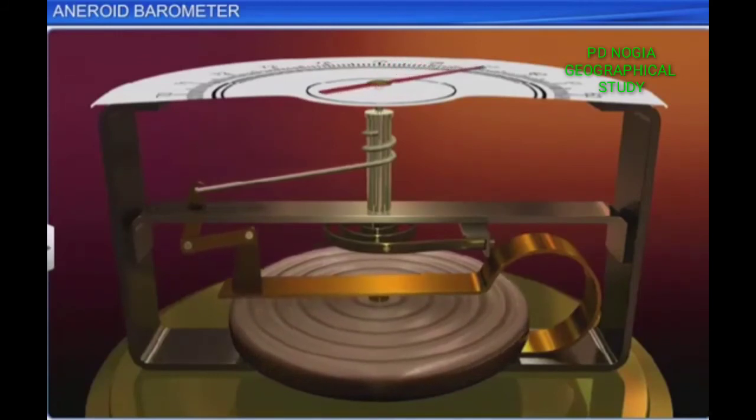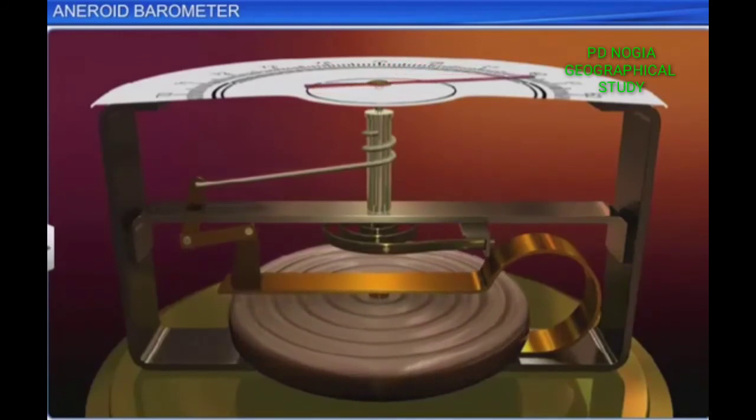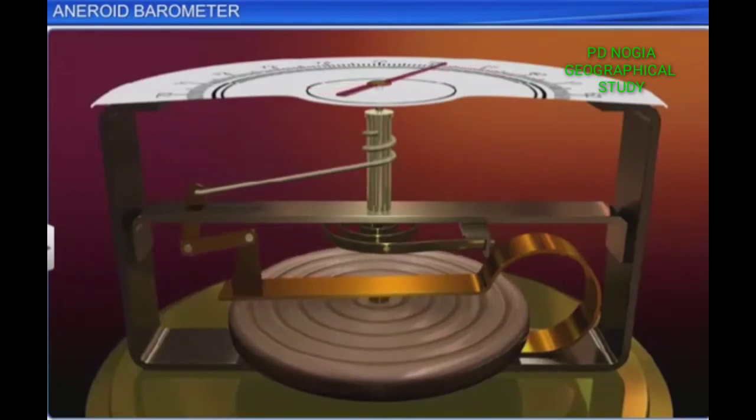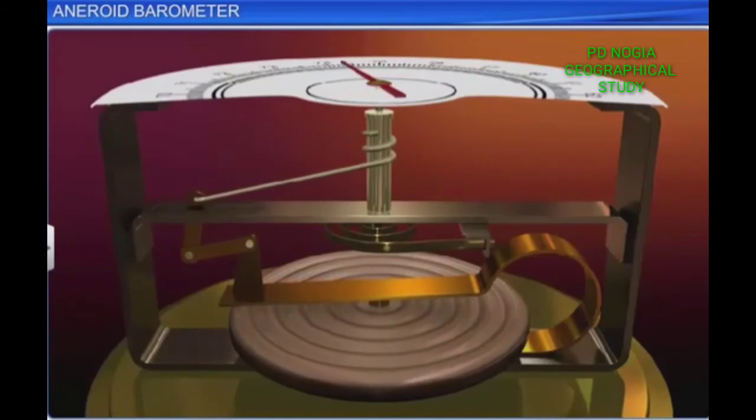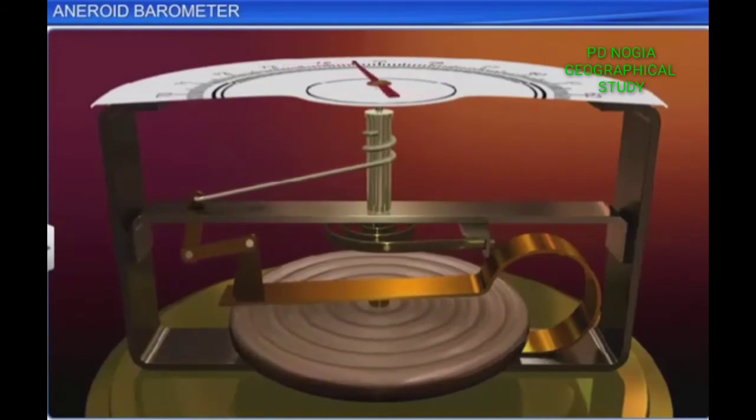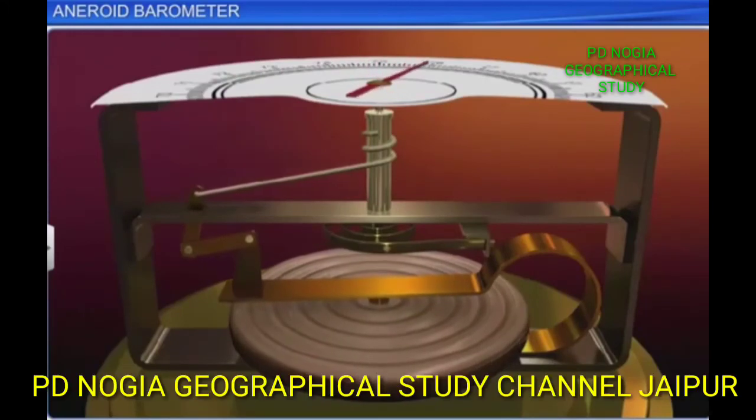When the atmospheric pressure decreases, the metallic box expands and the chain across the pulley loosens. The hair spring, connected to the pulley, helps the pointer adjust itself to the new atmospheric pressure.